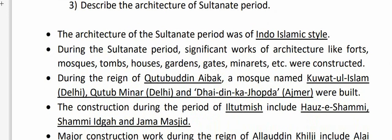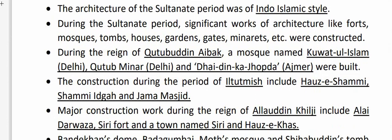Question 3: Describe the architecture of the Sultanate period — this is from Chapter 2. The architecture of the Sultanate period was of Indo-Islamic style. During the Sultanate period, significant works of architecture like forts, mosques, tombs, houses, gardens, gates, minarets, etc. were constructed.